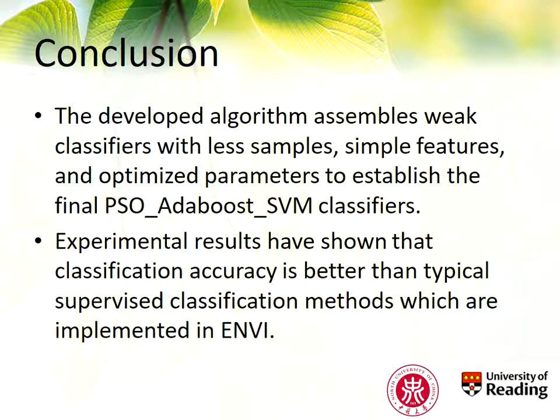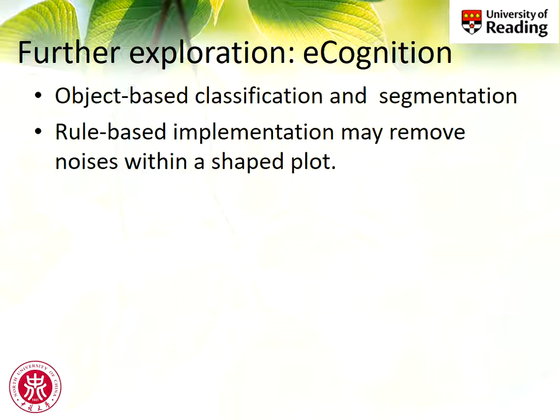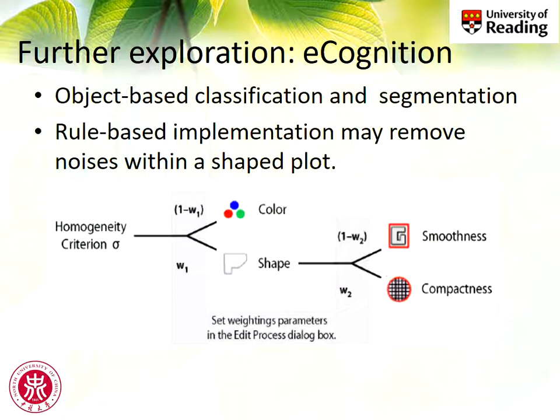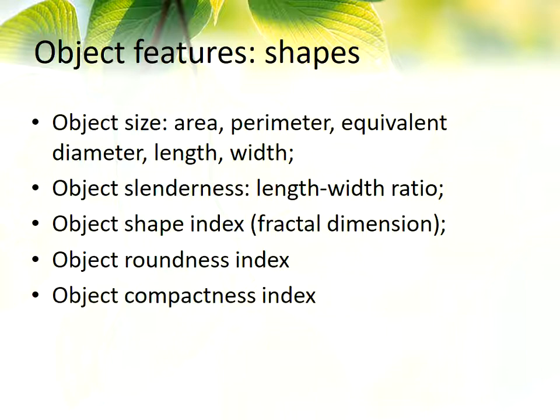In conclusion, we developed this algorithm based on computer vision methods very popularly used in the computer vision community. Experiments show our method performs slightly better than the result produced by ENVI. For future work, we plan to use e-cognition and combine shape features, moving from pixel-based to object-based classification, using shape features such as smoothness and roundness facilitated by the e-cognition software package.